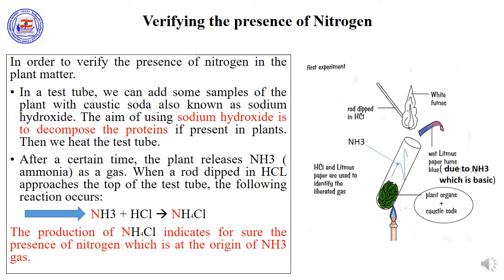Verifying the presence of nitrogen. Nitrogen is an accessory element needed for the formation of proteins. If we can verify that the plant contains nitrogen, then we can say that the plant has proteins, and the opposite is true. In a test tube, add some samples of the plant with caustic soda, also known as sodium hydroxide, NaOH. The aim of using sodium hydroxide is to decompose the proteins if present in plants. It is hypothesized that following the decomposition of protein and upon heating, nitrogen can be released in the form of ammonia gas, NH₃.